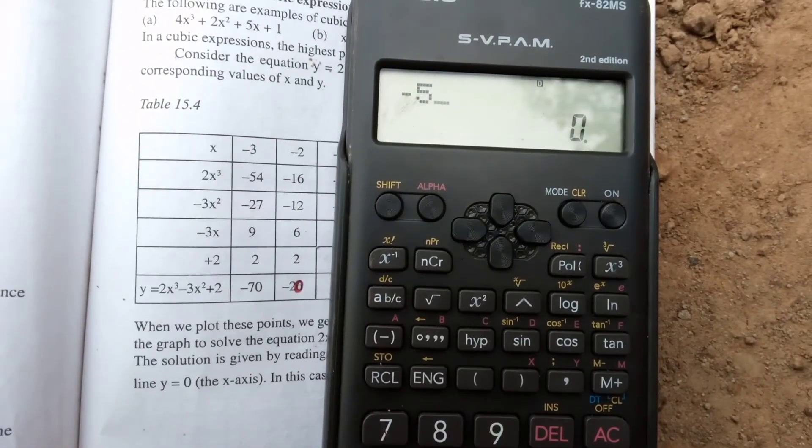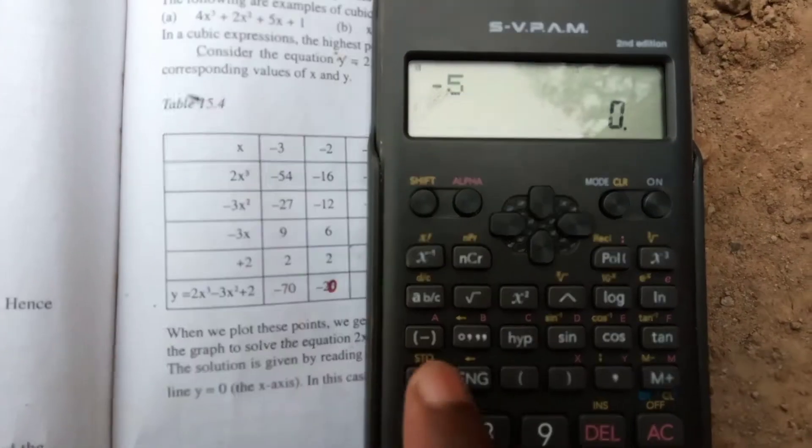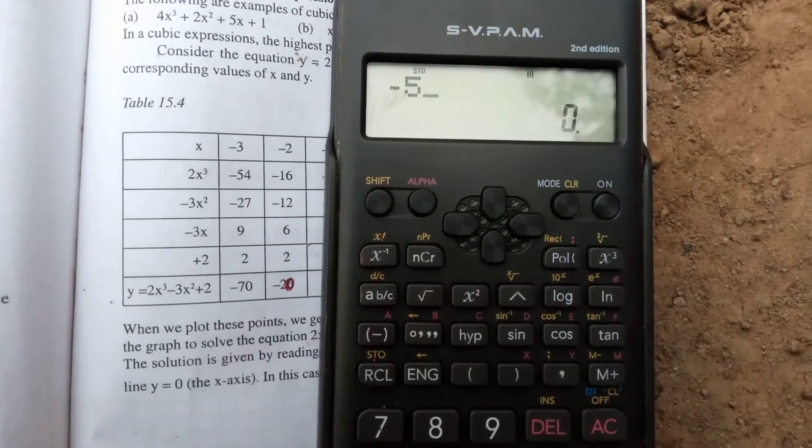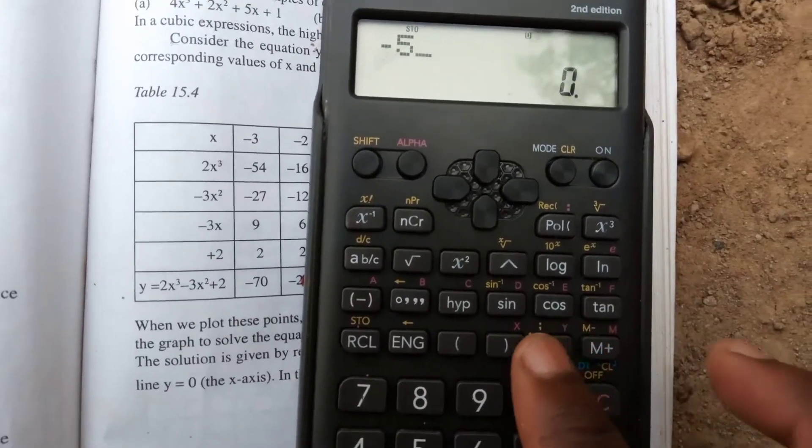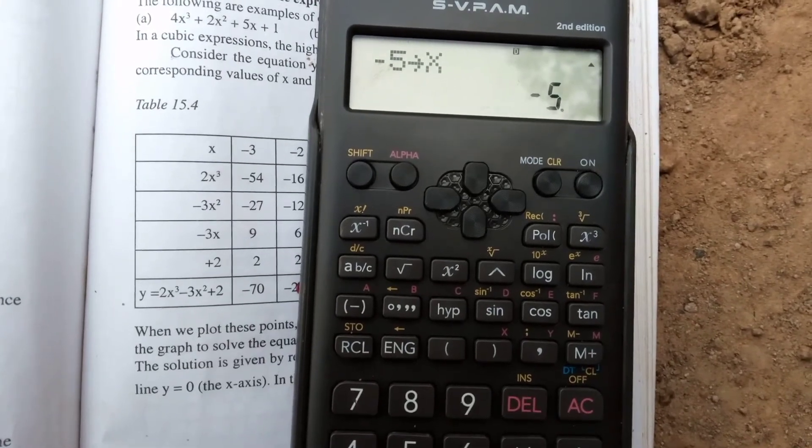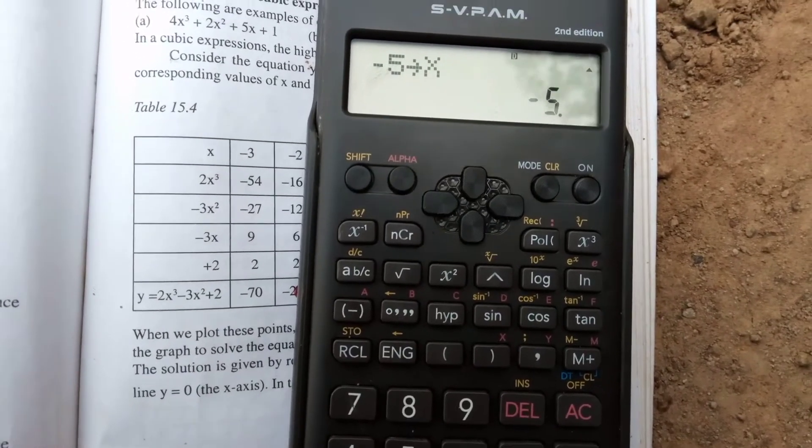After pressing negative 5, you press the shift button, then RCL. After pressing RCL, you press the bracket closure. Then you'll get it has written that way.